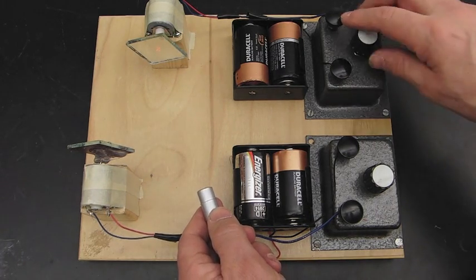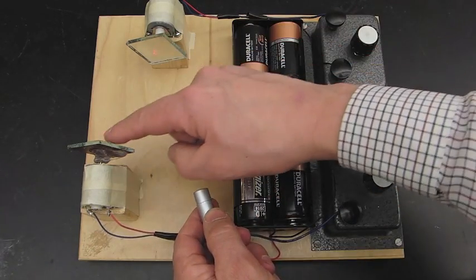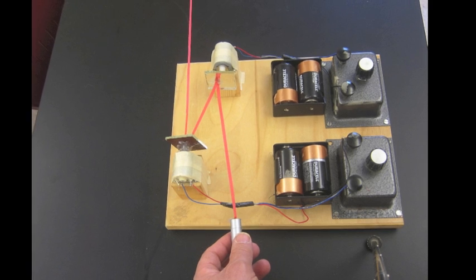A laser is aimed at the first mirror, then is reflected to the second mirror, and then finally broadcast onto a wall.